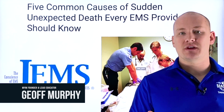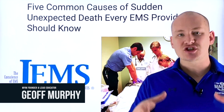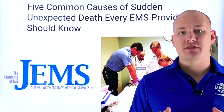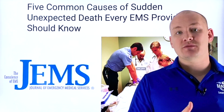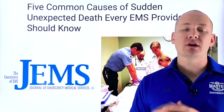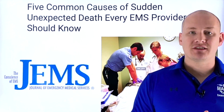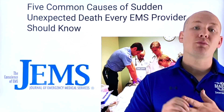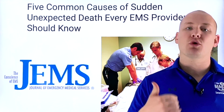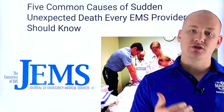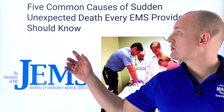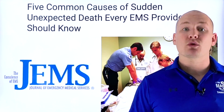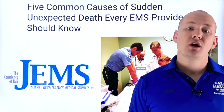We've split this series into five separate videos so we can really focus on each individual cause of death. Today we're going to be talking about arrhythmias, and in the coming weeks we're going to be talking about things like aortic dissections, cerebral events, massive pulmonary embolisms, and myocardial infarctions — all of which can cause unexpected death in the patients we deal with on a regular basis.